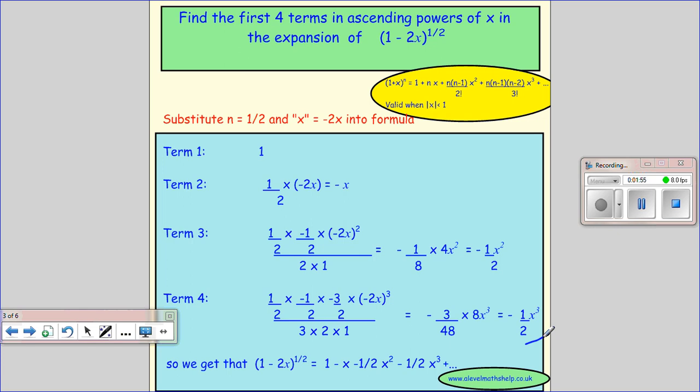So the first four terms in ascending powers of x, that means that x is going up, of this expansion is 1 minus x minus a half x squared minus a half x cubed.